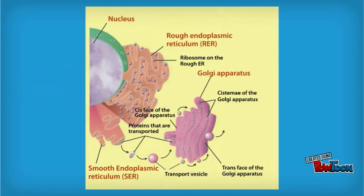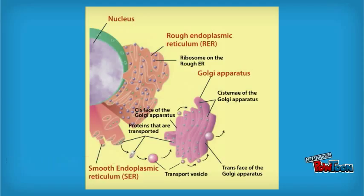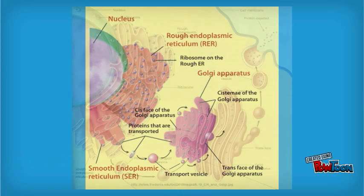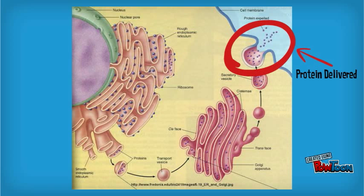A ribosome only binds to the endoplasmic reticulum once it begins to synthesize a protein. In most cases, proteins are transferred to the Golgi apparatus for finishing. They are conveyed in vesicles, or possibly directly between the ER and Golgi surfaces. After finishing, they are delivered to specific locations.